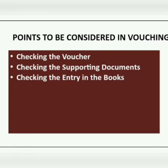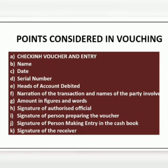Next is checking of vouchers — how to check the voucher. The auditor should see that the voucher shows a number of details. The first is the name of the concern: the auditor checks the name of the concern on the top of the voucher, which is proof that the transaction pertains to that particular client. Second is the date of the voucher, which is proof that the transactions pertain to the current year and not the prior or next year. Next is the serial number of the voucher, which helps to cross-check that all transactions are properly recorded — that is, no transaction is omitted.